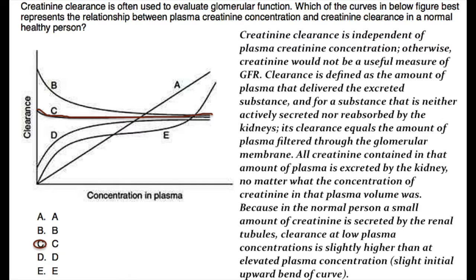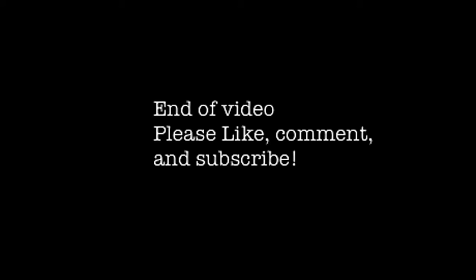Because in the normal person, a small amount of creatinine is secreted by the renal tubules, clearance at low plasma concentrations is slightly higher than at elevated plasma concentration — hence the slight initial upward bend of curve C.